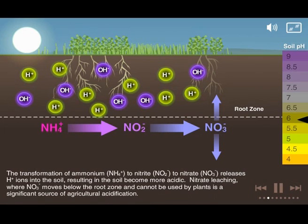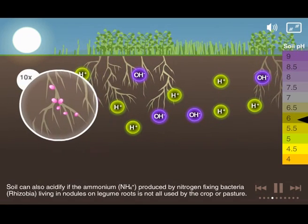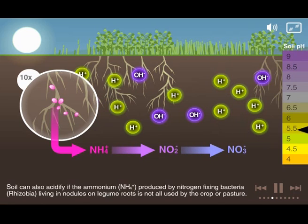Nitrate leaching, where nitrate moves below the root zone and cannot be used by plants, is a significant source of agricultural acidification. Soil can also acidify if the ammonium produced by nitrogen-fixing bacteria — rhizobia — living in the nodules on legume roots is not all used by the crop or pasture.